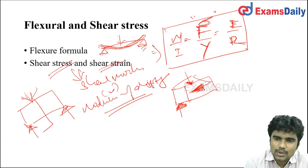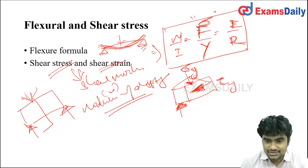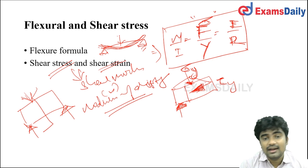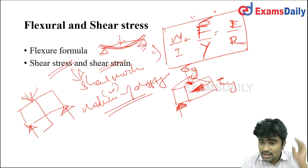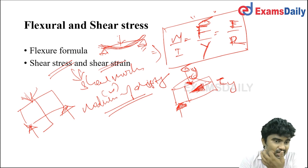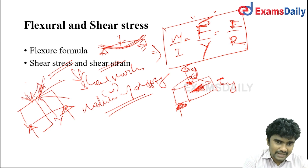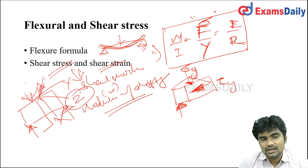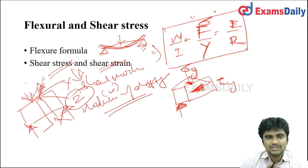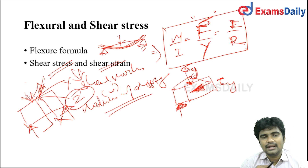Based on this shear stress, a strain occurs in a prismatic member or bar — this is known as shear strain. Under inclined load conditions, the shear stress acts on an inclined section. In two-dimensional stress analysis, shear stress acts in case of inclined loading.